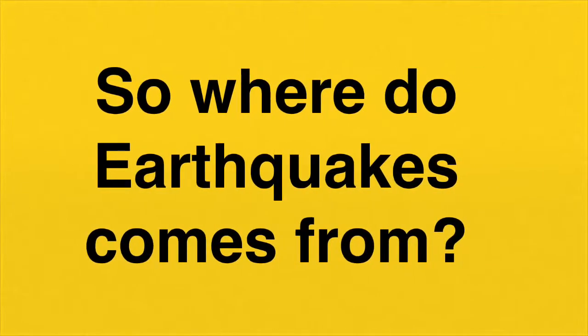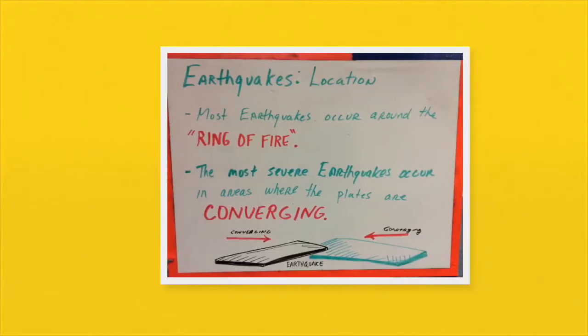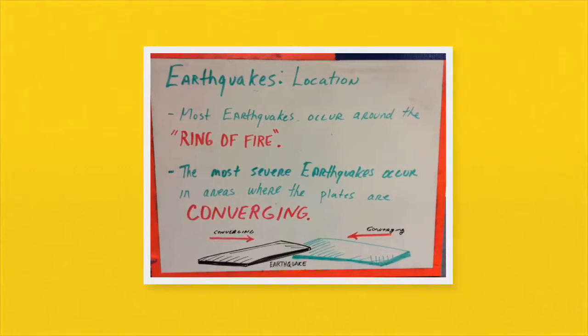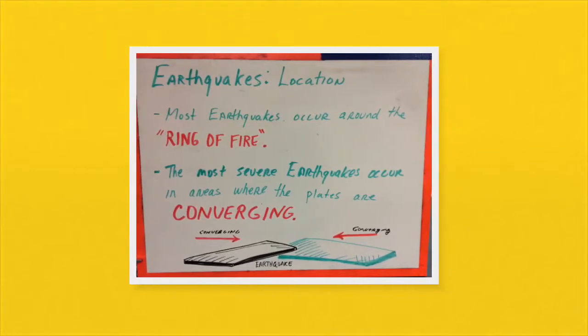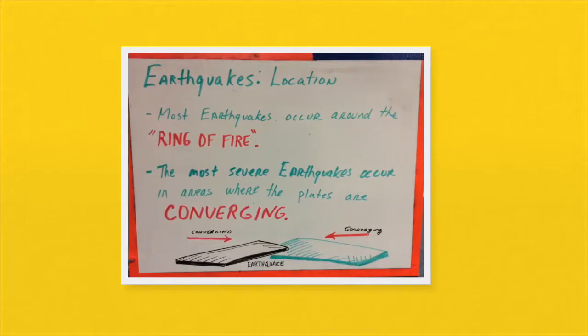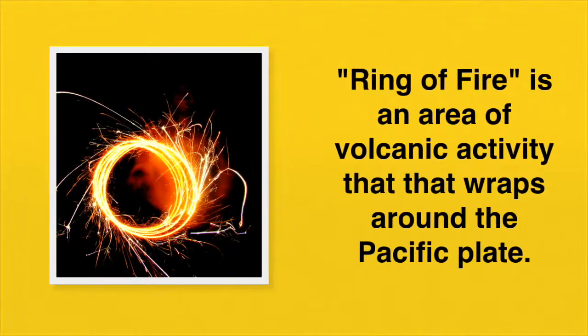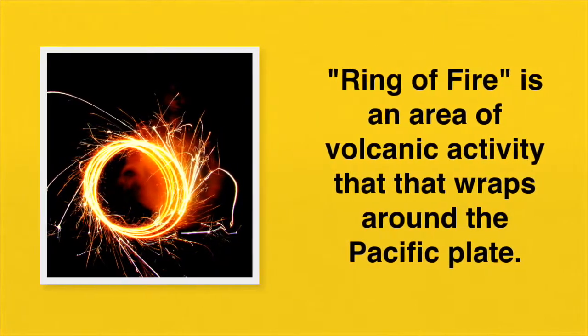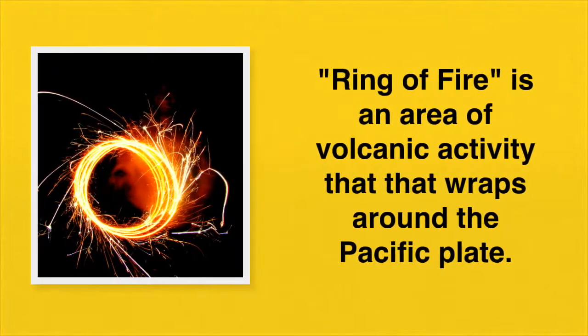So, where do earthquakes come from? We have learned that earthquakes primarily occur around the Ring of Fire. The most severe earthquakes occur in areas where the plates are converging. The Ring of Fire is an area of volcanic activity that wraps around the Pacific Plate.